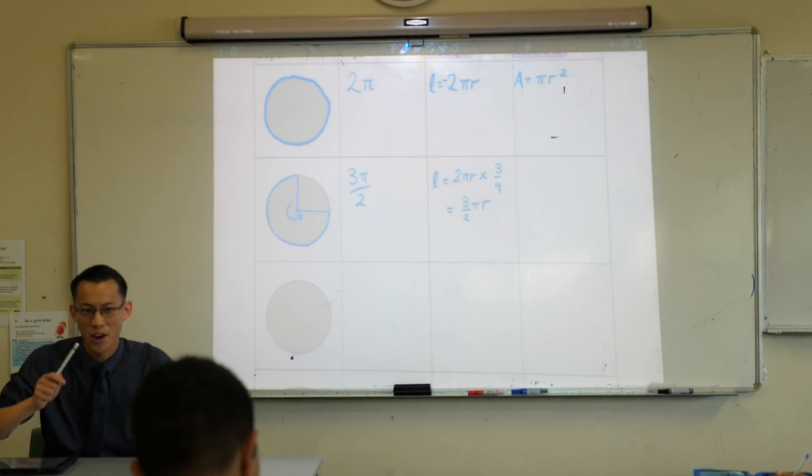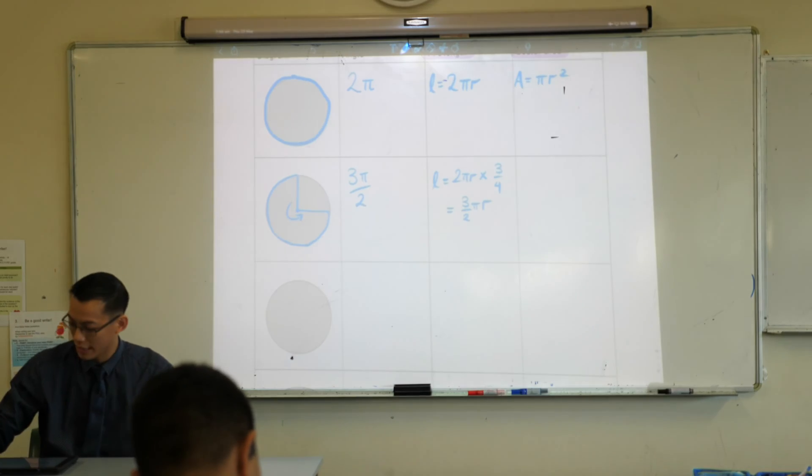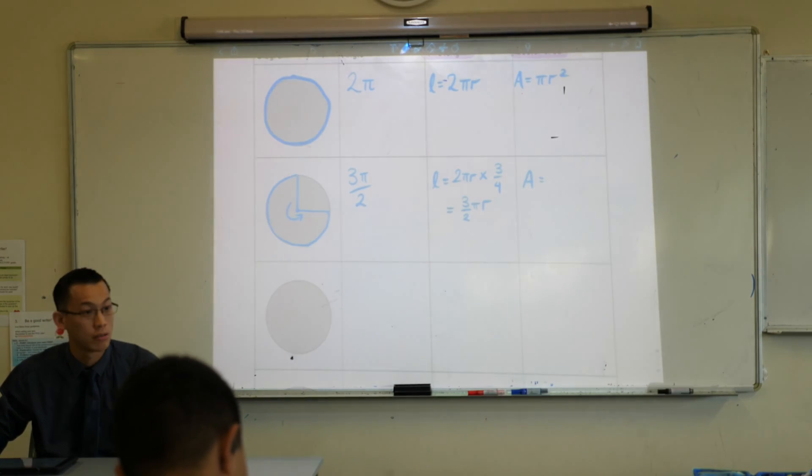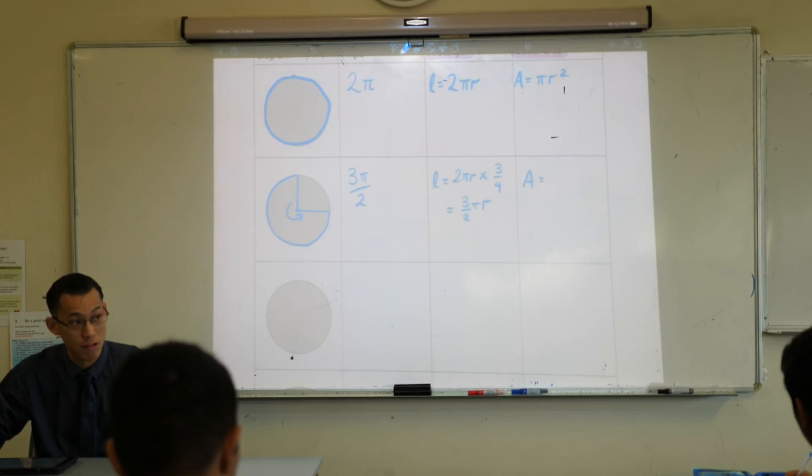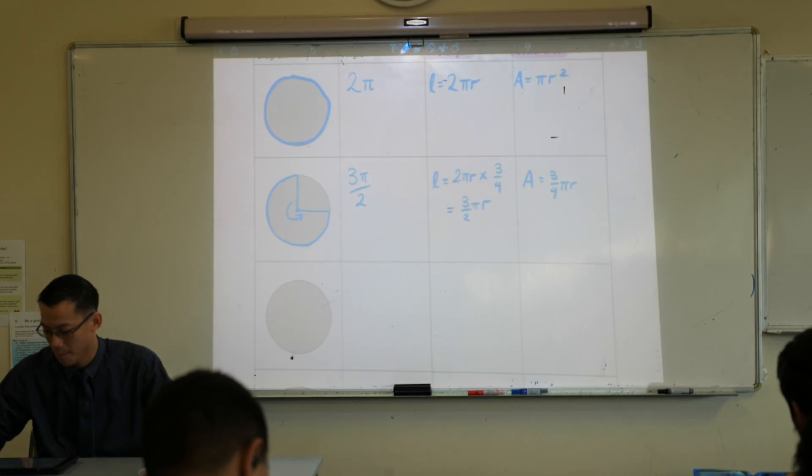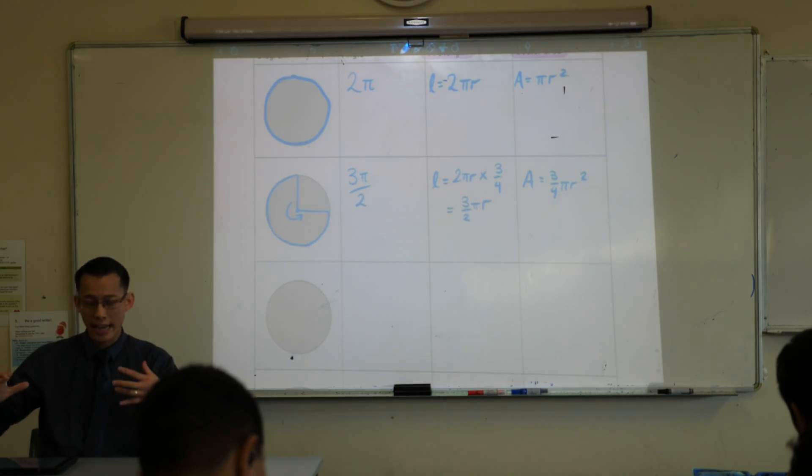Let's go over to the area. I'm not getting the whole area of the circle. I'm only getting, again, three quarters, right? So I guess I would write that as three quarters times πr². You're okay with that? You're starting to get a hang of this.